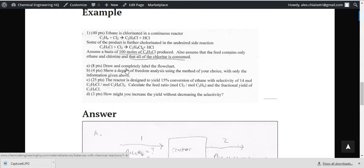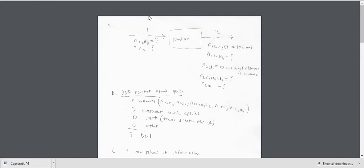We know that the feed contains ethane and chlorine, but all of the chlorine that is in it is consumed. So the first question asked is to draw and completely label the flowchart. We've made a flowchart of the reactor. We know that there's only two components going in, chlorine and ethane, but we don't know how much of each of those are going in.